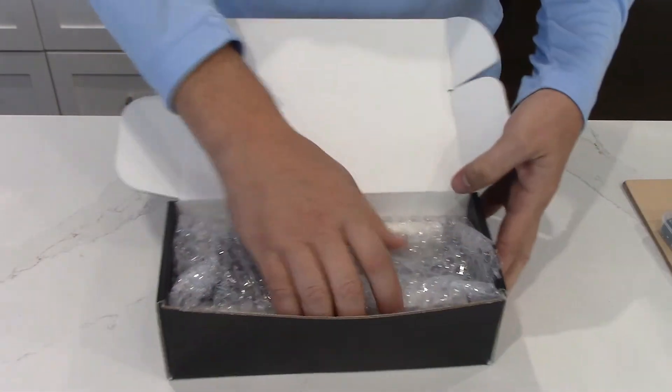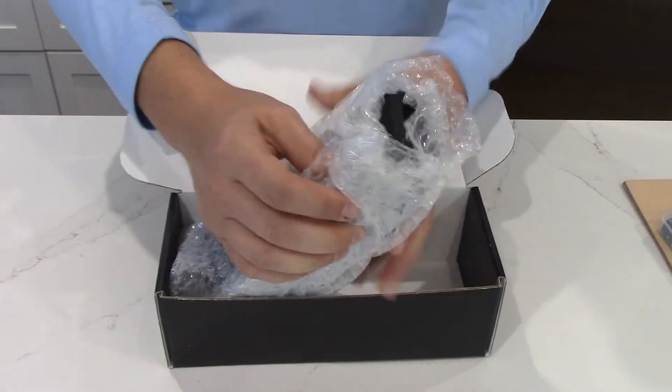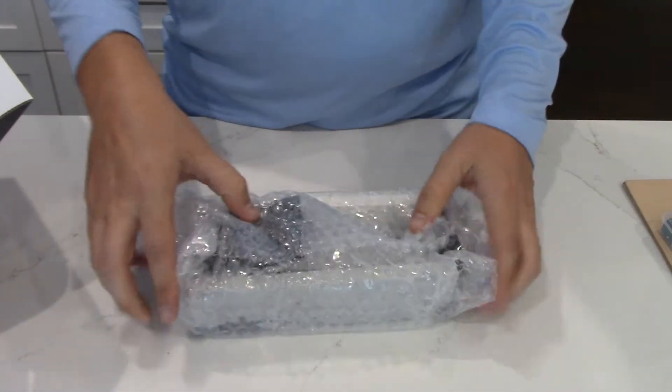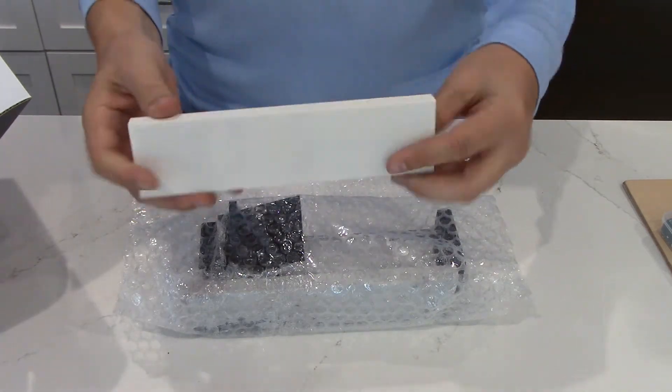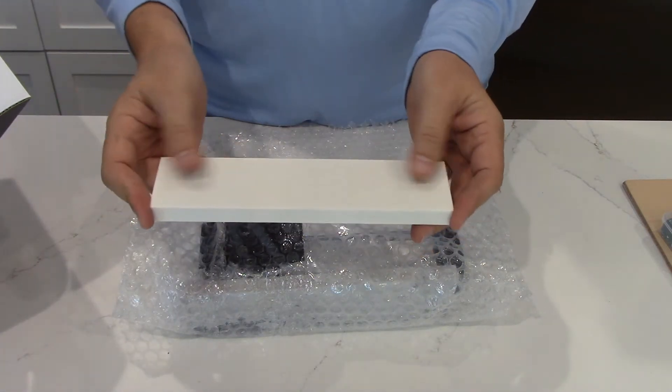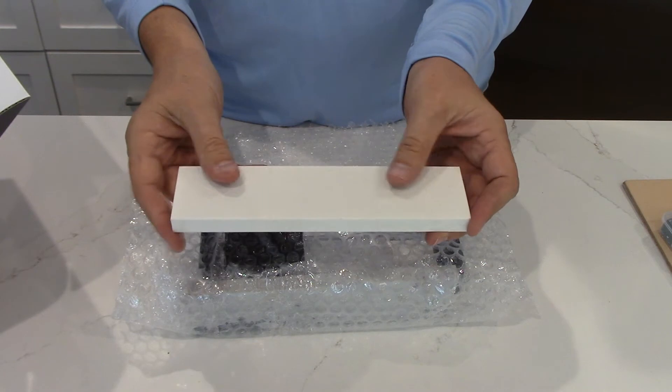And then here is the sharpener package. So here's the aluminum oxide stone. It's 220 grit.